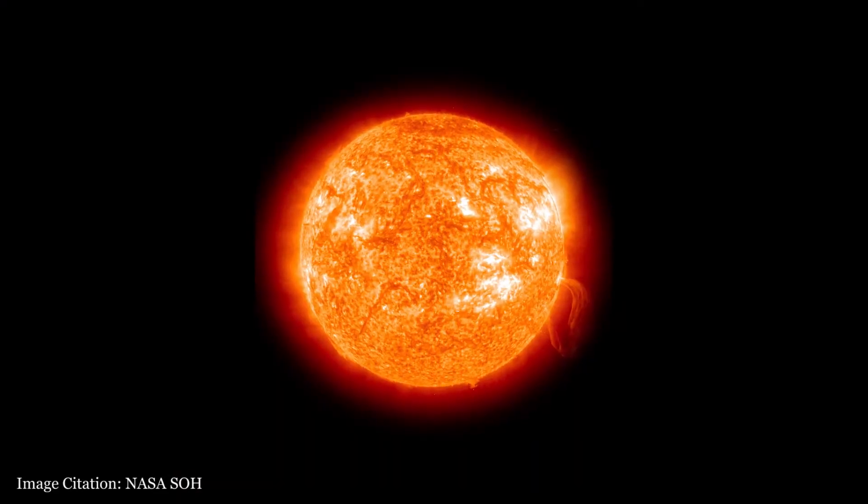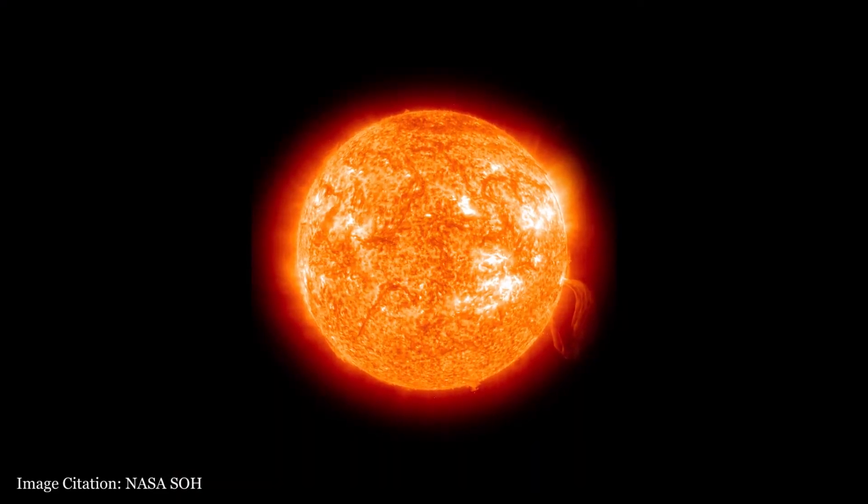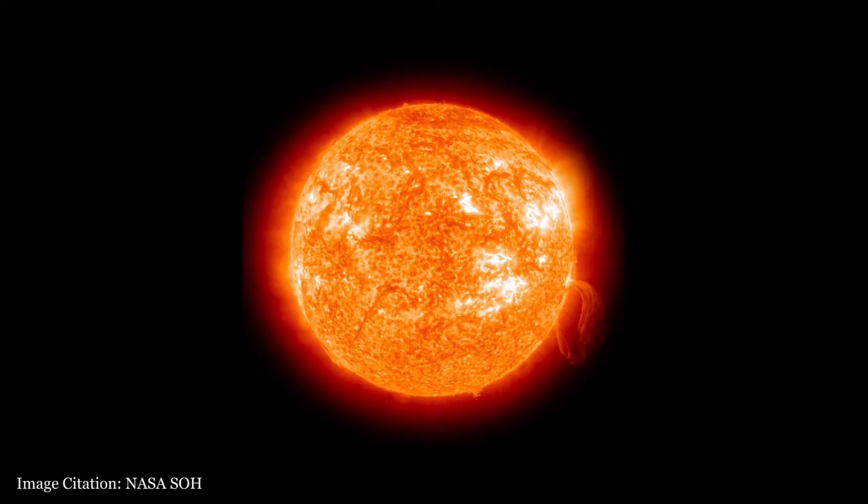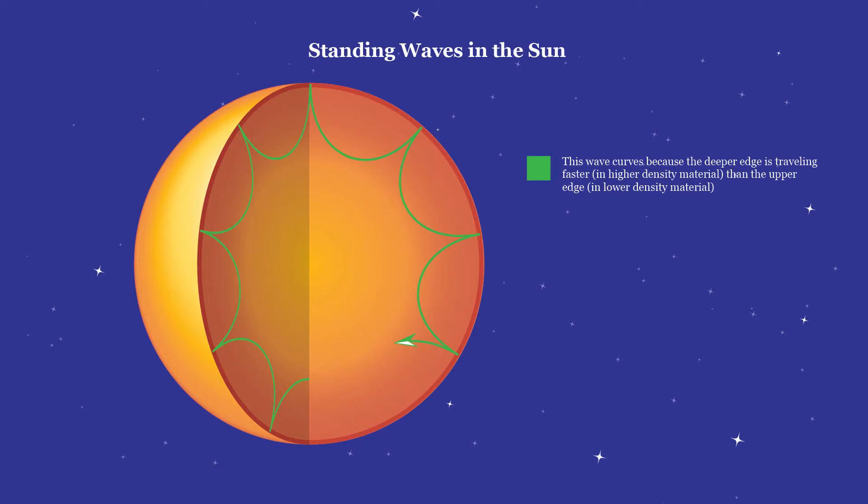So, where do standing waves show up in astronomy? Helioseismology is the study of pressure waves, basically sound waves, in the sun. A multitude of wavelengths of sound are created by turbulence in the convection in the outer regions of the sun. Destructive interference cancels out all but the standing waves, where the surface of the sun creates nodes.